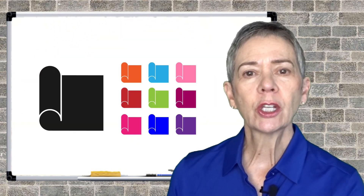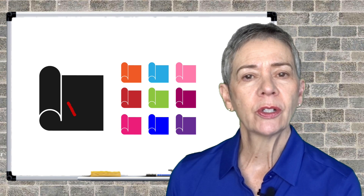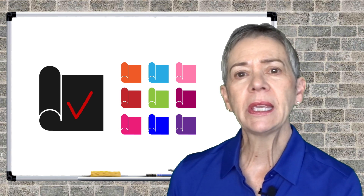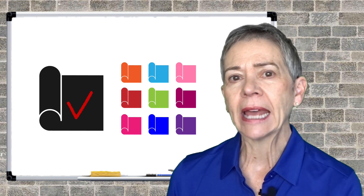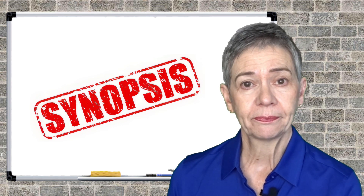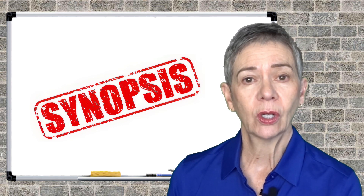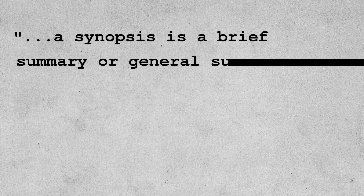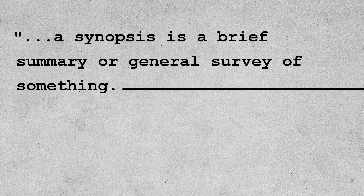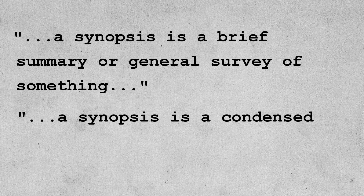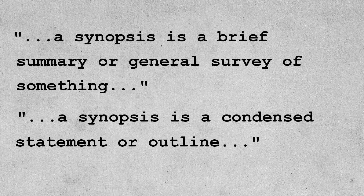Let's make sure we're all on the same page and understand what a book synopsis is. Let's begin by looking at a definition of the term. A synopsis is a brief summary or general survey of something. A synopsis is a condensed statement or outline.